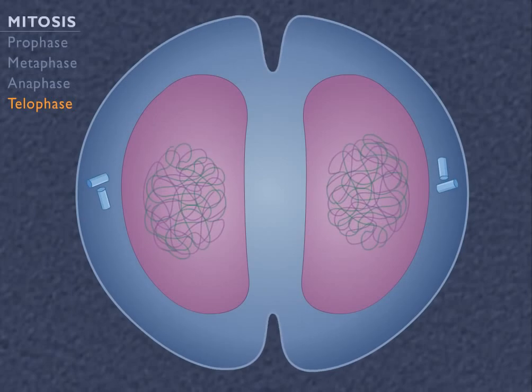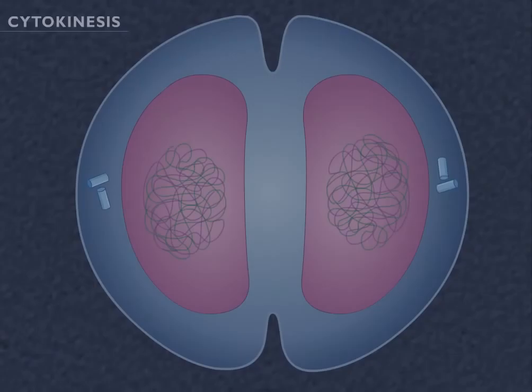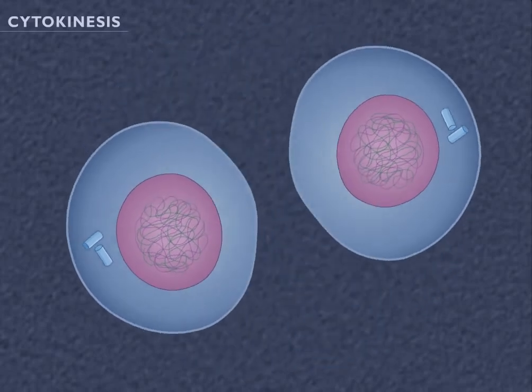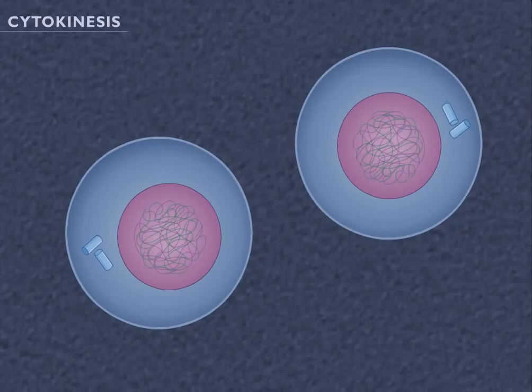The division of the cytoplasm and organelles is called cytokinesis, or the C phase. The result of mitosis and cytokinesis is the formation of two genetically identical cells.